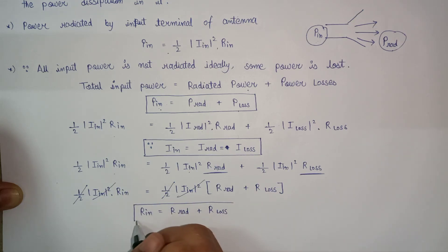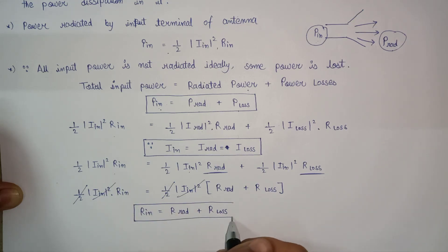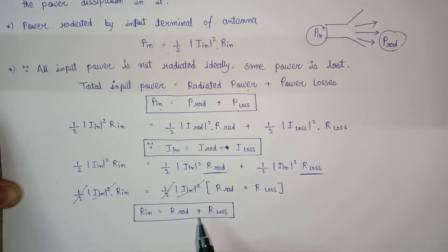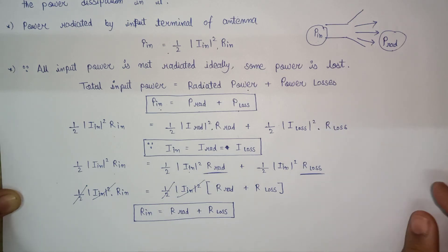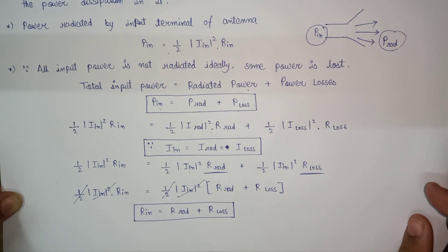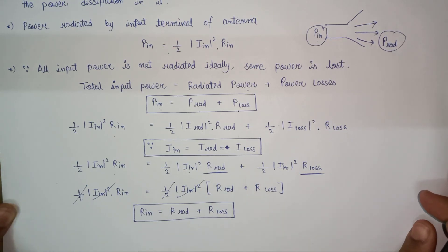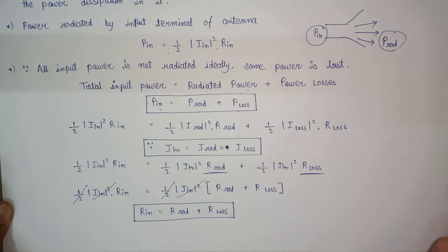So the input resistance is equal to the sum of radiation resistance and the loss resistance. This is all about the radiation resistance of an antenna. If you like this content, please subscribe to the channel and hit the like button. Thank you.